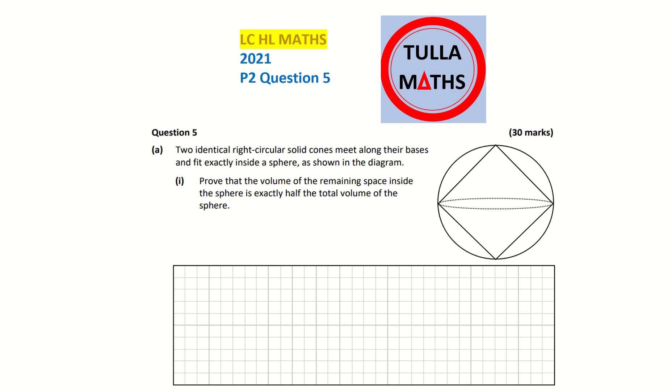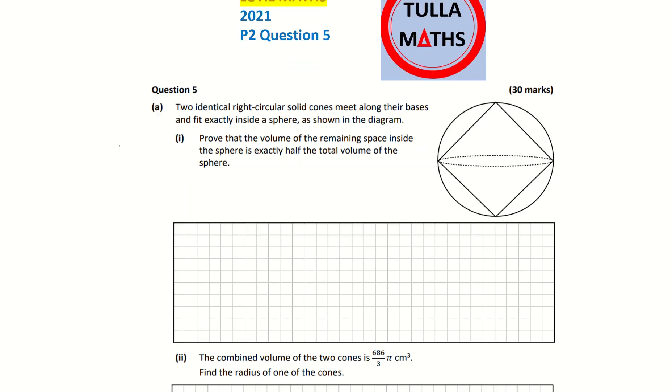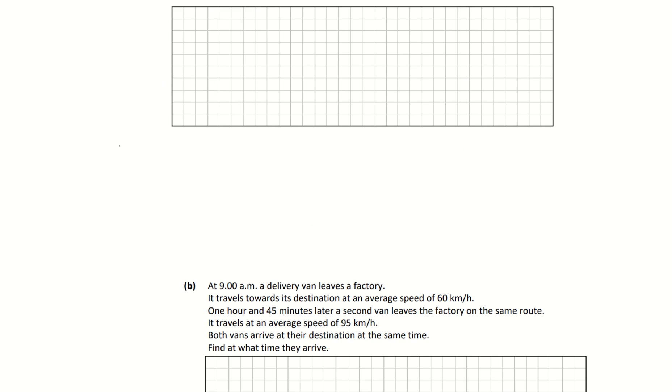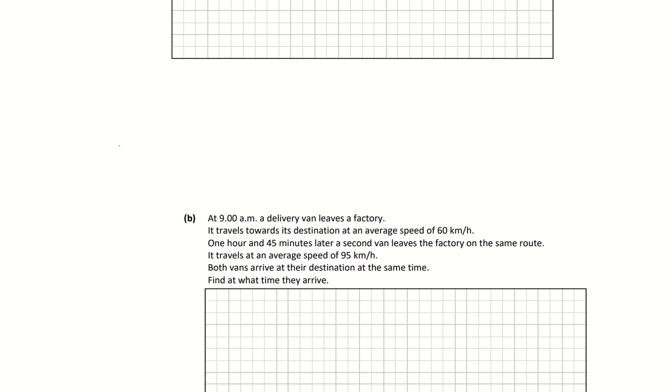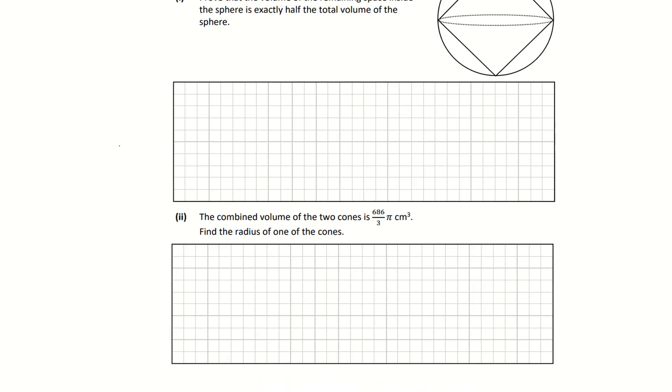This is the sample solution to the 2021 Leaving Cert Higher Level Maths paper 2, question 5. It has an A and a B, and there's two parts to the A, and then the B is the time, distance, and speed question. We'll look through the full question here now.